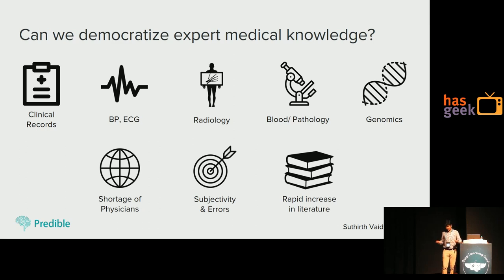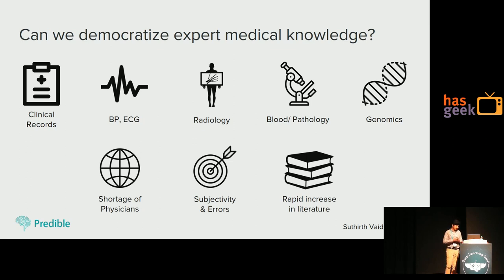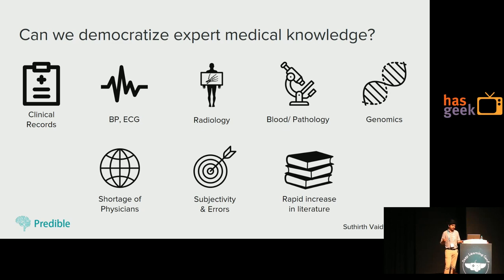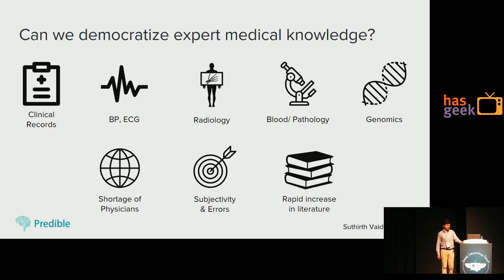You have BP, ECG, or other readings — 1D or 2D signals. You have radiology imaging: X-rays, MRIs — 2D, 3D, 4D images. Doctors are reading these images and giving reports. You have pathology data, which is again a microscopic image — a pretty large image — where you look at what's wrong and send back the inference.